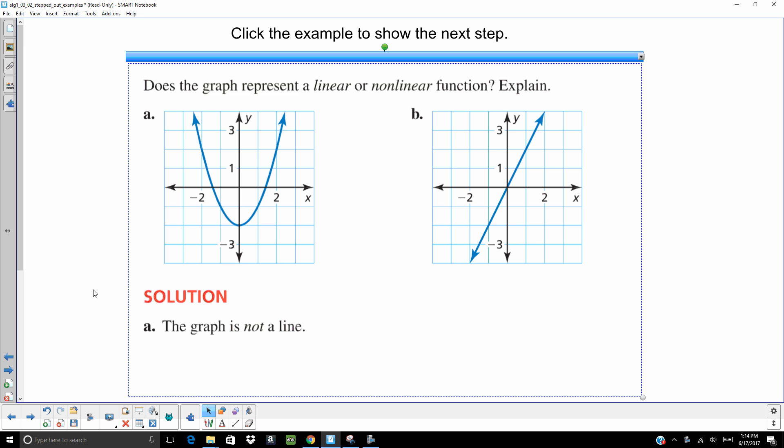So that first one, graph's not a line. It's not linear. B, it's a line. It's linear. It really is that easy.